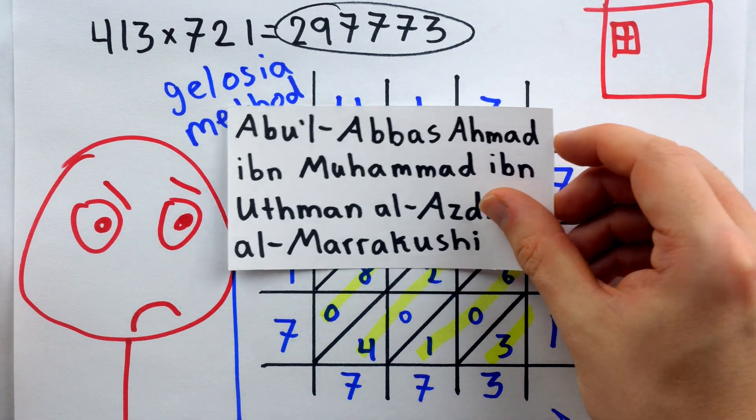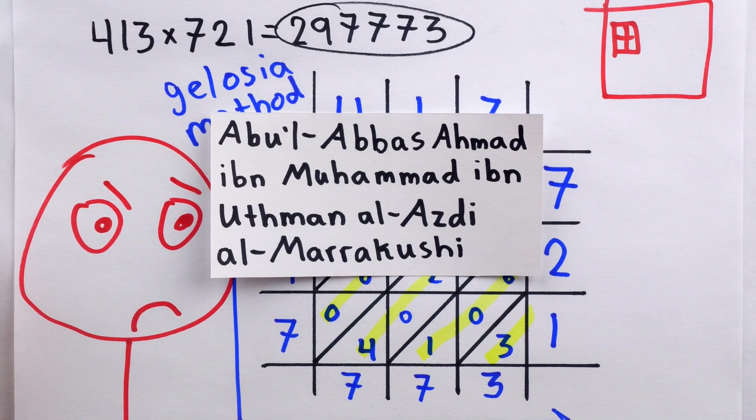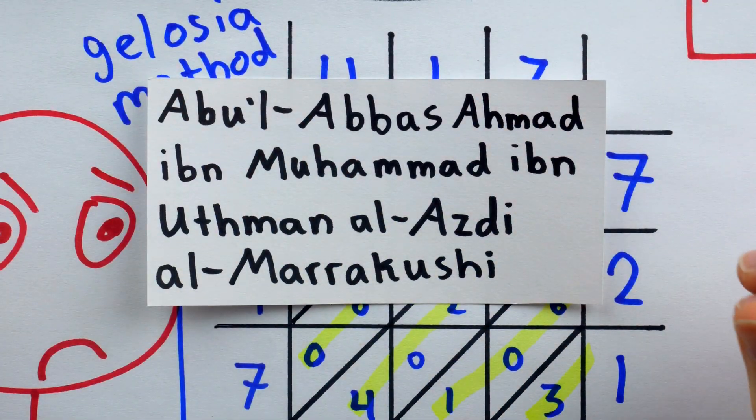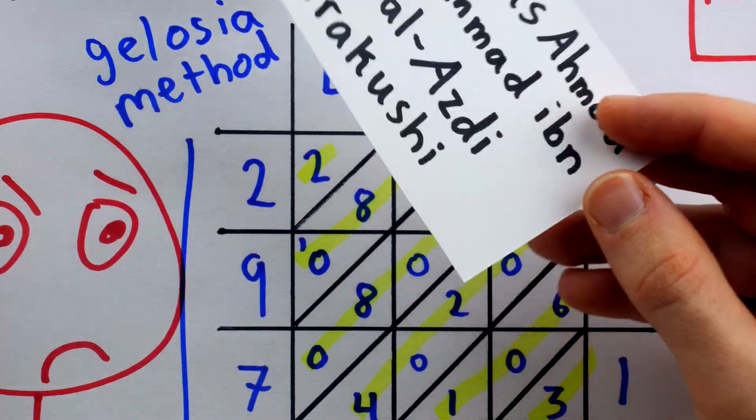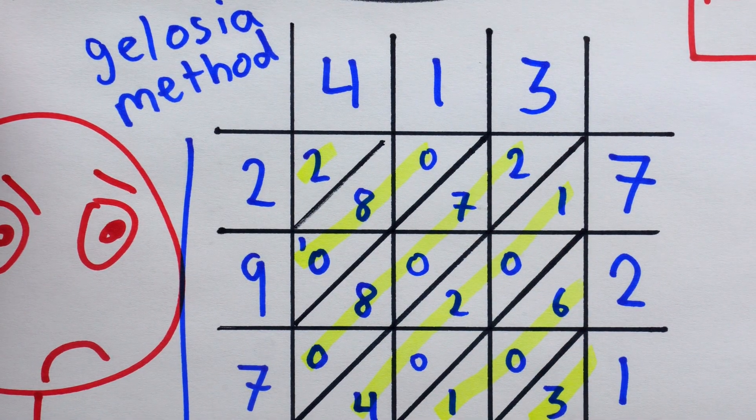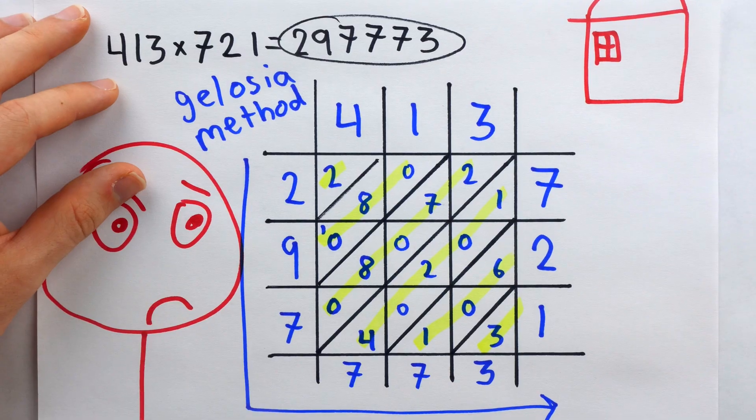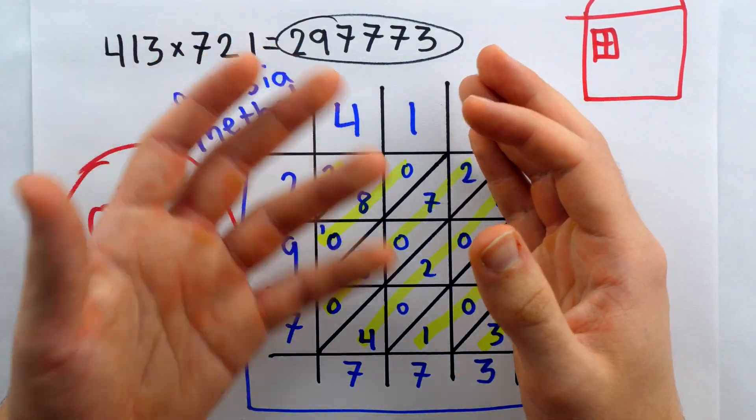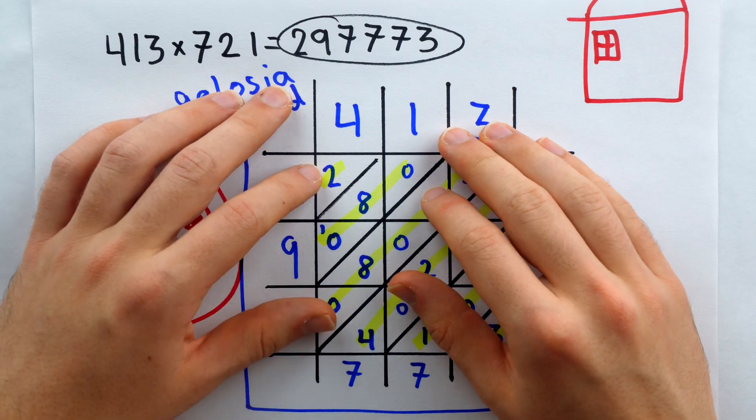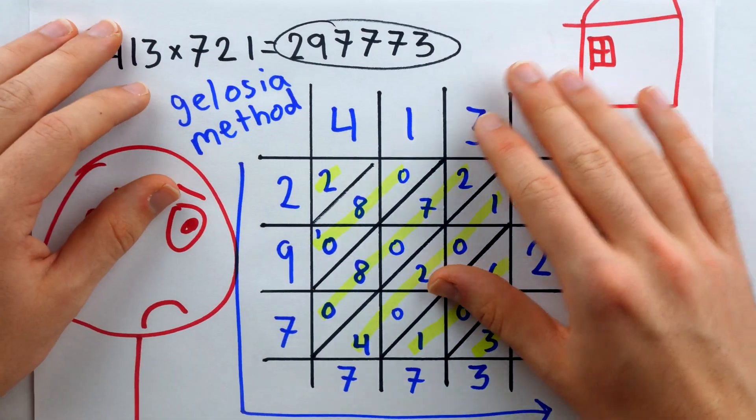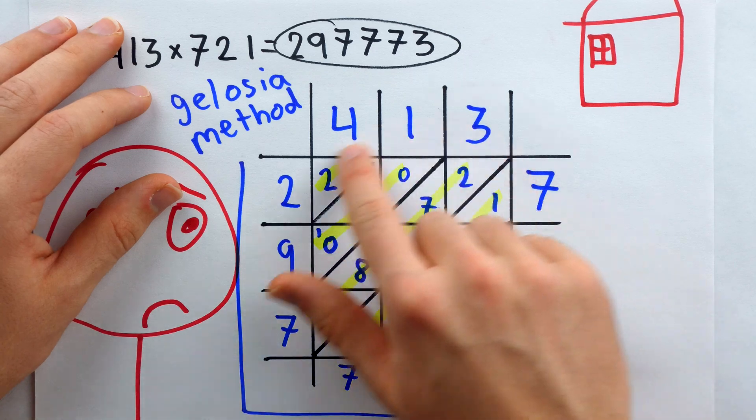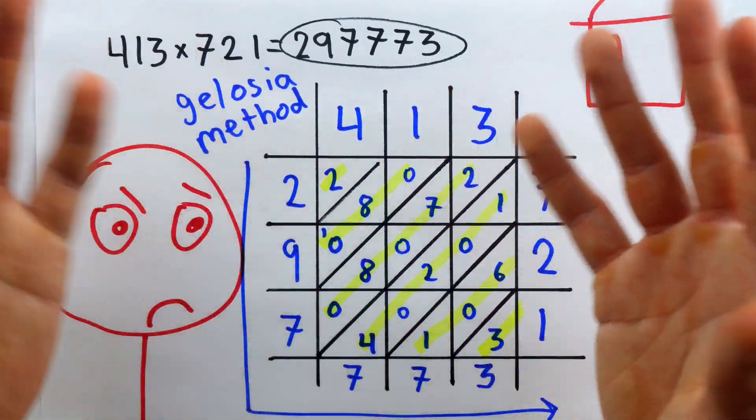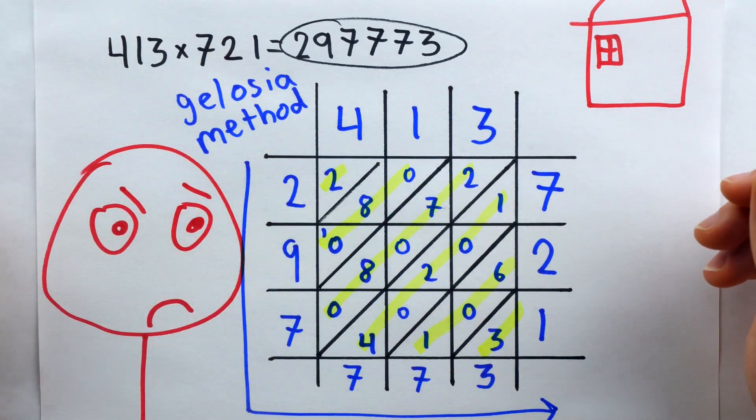it was in the late 1200s that Abul Abbas Ahmad ibn Muhammad ibn Uthman al-Azdi al-Marakushi introduced it in one of his works. It seems likely that this method of multiplication was discovered independently at different times throughout the world. It's sometimes said that Fibonacci brought it to the world of European mathematics, but so far as I can tell, there is no actual appearance of this method in his written works. Although it should be noted that the earliest edition of his Liber Abaci text is lost to history.